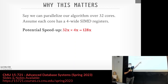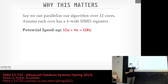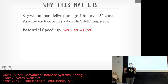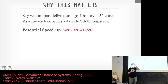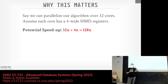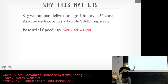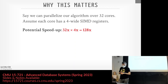That 128× is a massive win — but it's the theoretical upper bound. In a database system there's a bunch of things we can't vectorize, so we'll never fully achieve it. For the tight inner loops processing tuples, we'll get maybe 2–4× speedup in practice.